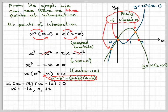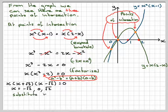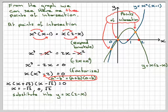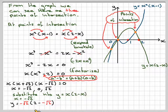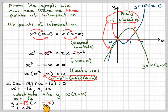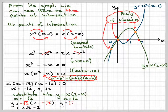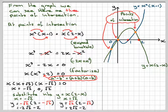So the x-values are -√2, 0, and +√2. Substituting into y = x(2 - x), the easier of the two equations: when x = -√2, y = -√2(2 - (-√2)) = -√2(2 + √2) = -2√2 - 2. When x = √2, y = √2(2 - √2) = 2√2 - 2. When x = 0, y = 0.